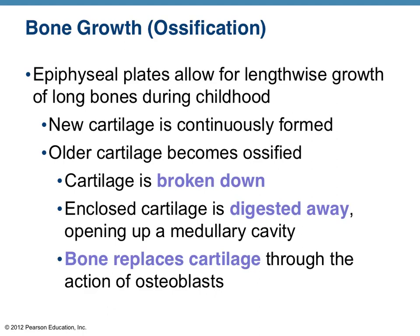If you remember from the structure of bone tissue, the epiphyseal plates — or simply put, the growth plates — allow for the lengthwise growth of long bones, meaning growing taller and arms growing longer. New cartilage cells are continuously formed at that epiphyseal plate, and the older cartilage actually becomes ossified, which means it becomes bony bone.